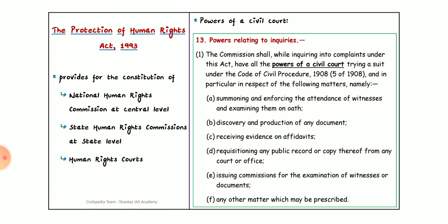The National Human Rights Commission has the power of a civil court. These civil court powers include: summoning and enforcing the attendance of witnesses and examining them on oath; discovery and production of any documents; receiving evidence on affidavit; and issuing commissions for the examination of witnesses or documents, and any other matters which may be prescribed.